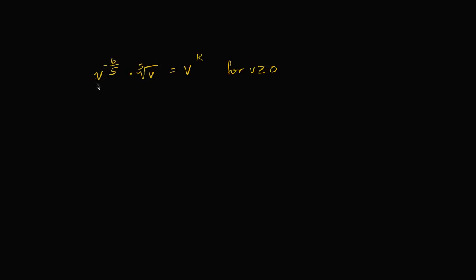So I have an interesting equation here. It says v to the negative six-fifths power times the fifth root of v is equal to v to the k power for v being greater than or equal to zero.